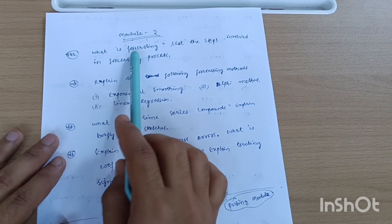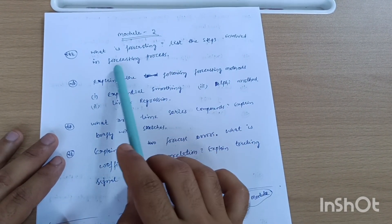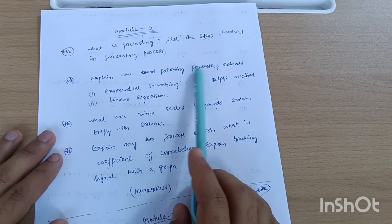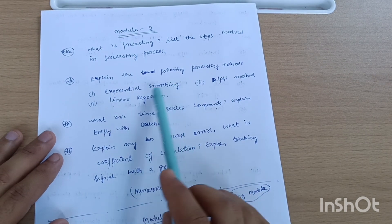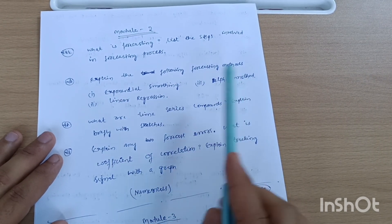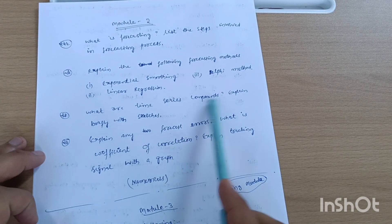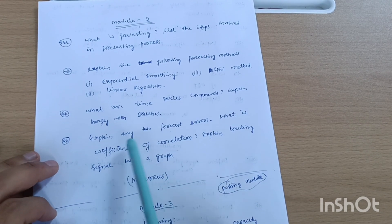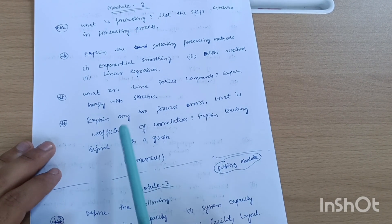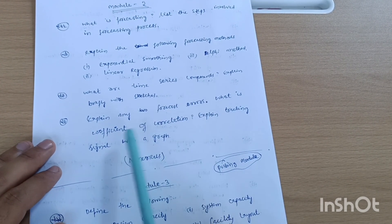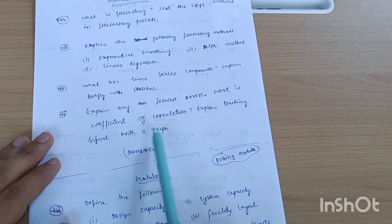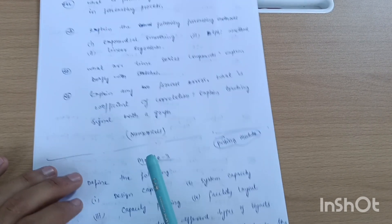Next is Module 2. What is forecasting? List the steps involved in forecasting process. Explain the following forecasting methods: exponential smoothing, linear regression, Delphi method. What are the time series components? Expand briefly with sketches. Expand any two forecast errors. What is coefficient of correlation? Explain tracking signal with a graph. As usual for numericals, what I have already said in this video.